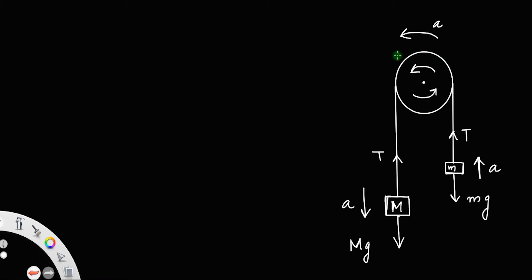Consider a pulley rotating in the anticlockwise direction. Suppose two masses, capital M and small m, are hung on either side of the pulley using a rope. Let M be greater than m — that is, the mass on the left side is greater than that on the right side. So the acceleration will be in this direction: the heavier mass will come down and the smaller mass will go up.